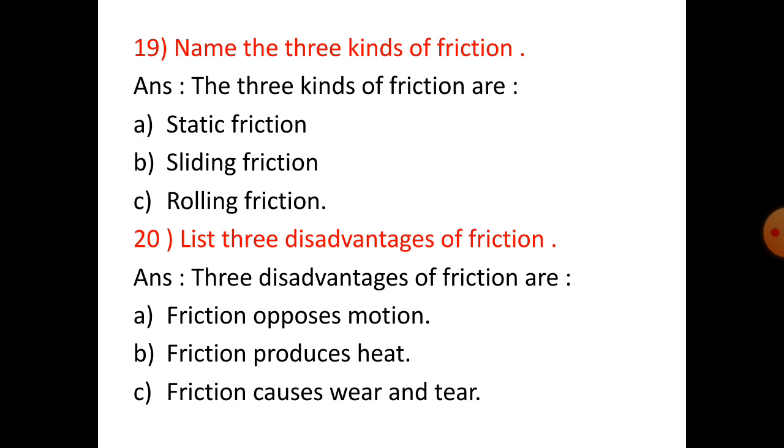Number 17 and 18 answers are given in your book. Question 19: Name the three kinds of friction. The three kinds of friction are static friction, sliding friction, and rolling friction. Question 20: List three disadvantages of friction. Three disadvantages are: friction opposes motion, friction produces heat, and friction causes wear and tear.